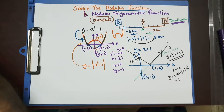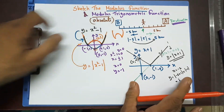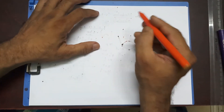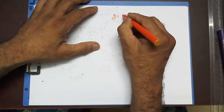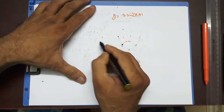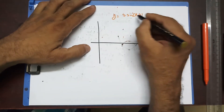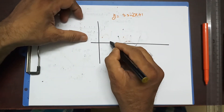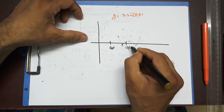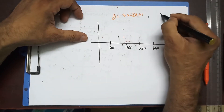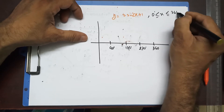Now let's do some trigonometry functions. Since we've already covered sine, cos, and tan, I'm going to go really fast. Let's say y = 3sin(2x) + 1, with X ranging from 0° to 360°. The baseline is 1, so I'll draw a dotted line there. The amplitude is 3, meaning it goes up to 4 and down to -2.